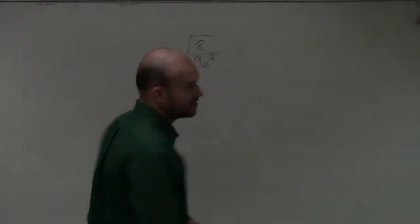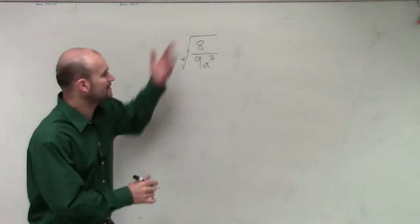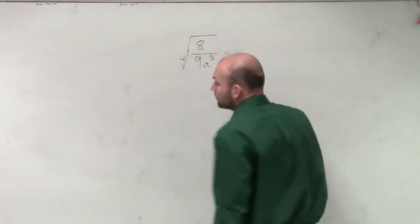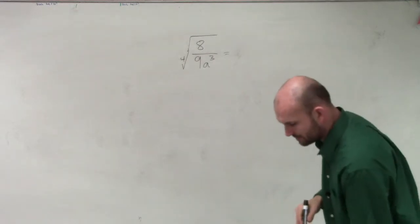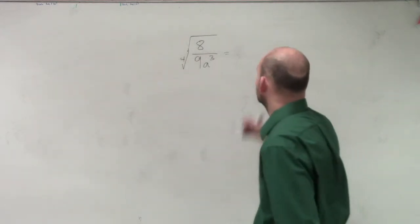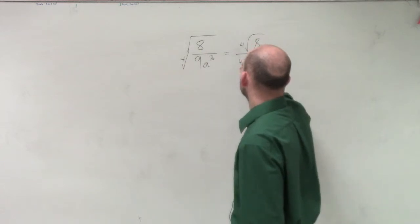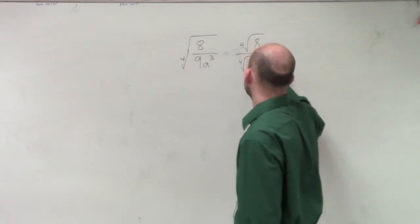This one's going to get a little bit difficult, because we look at this and we know that, all right, automatically, first thing we want to do is break it up. So what we'll do is break this up and say, all right, that can be the 4th root of 8 divided by the 4th root of 9a cubed.